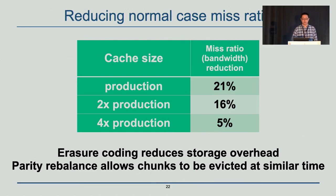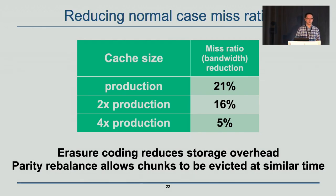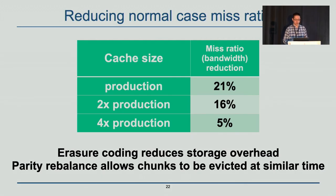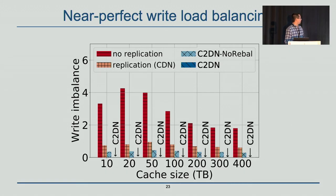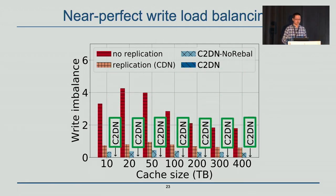Now let's talk about miss ratio when there's no unavailability. We observe that C2DN significantly reduces the normal-case miss ratio compared to CDN, at various cache sizes — both at production cache size and much larger. This is because erasure coding reduces storage overhead, so C2DN can cache more objects in the cluster. Parity rebalance allows chunks to be evicted at similar times, so C2DN does not have the problem that occurs with naive erasure coding. We also show near-perfect write load balancing in C2DN. Compared to no replication with huge write load imbalance, and to replication and naive erasure coding, the C2DN bar is nearly absent because it has almost perfect write load balancing.